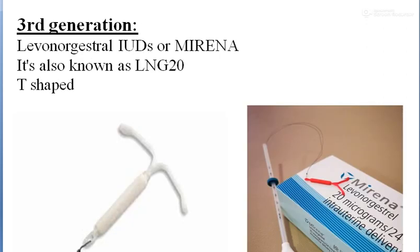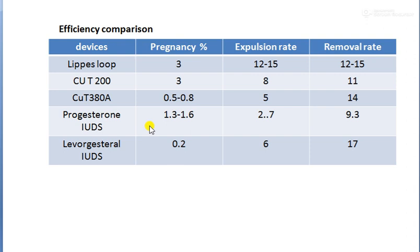The third generation includes levonorgestrel-based IUDs. Mirena is a brand name for this type, also known as LNG-20. It is T-shaped but is not wrapped with copper wire — it looks like a white T-shepherd design and represents the latest, most modern version of IUDs.